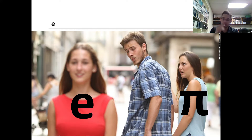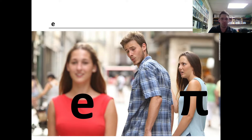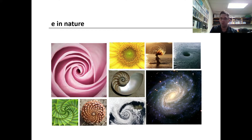So what is e? e is like pi — it's just some transcendental number. The decimal doesn't end; it's a non-repeating, non-terminating decimal. It's one of those numbers that just kind of shows up in nature. You can see the spiral that shows up in all of these different things. Fibonacci has a thing or two to say about this too, and we can find e in all of these spirals.